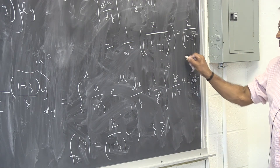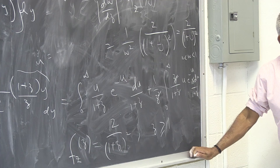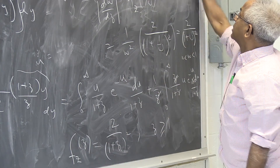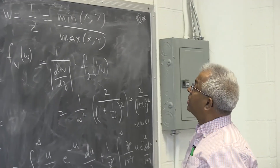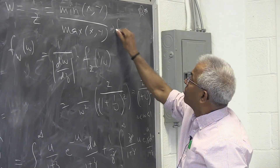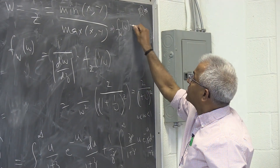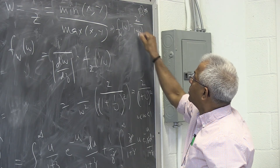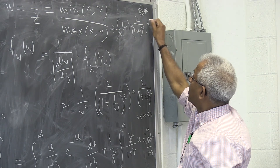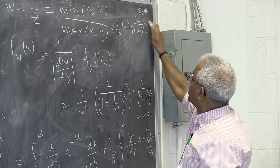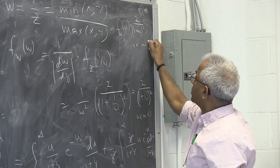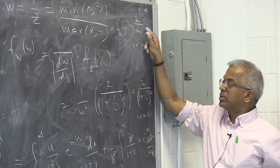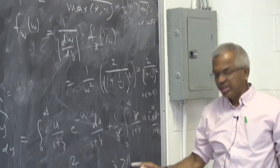So the answer is: the density function of W, which is min/max, has the same form 2/(1+w)² for w between 0 and 1, while the density function of Z = max/min is 2/(1+z)² for z greater than 1.